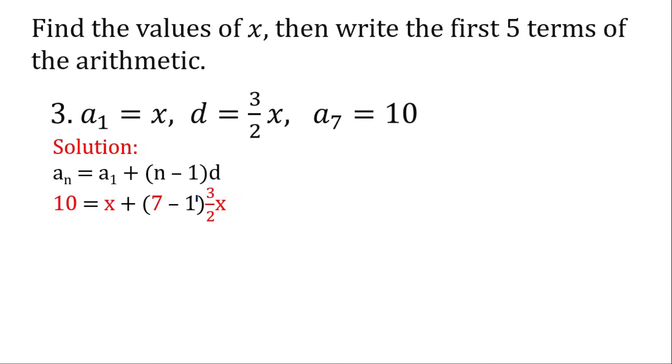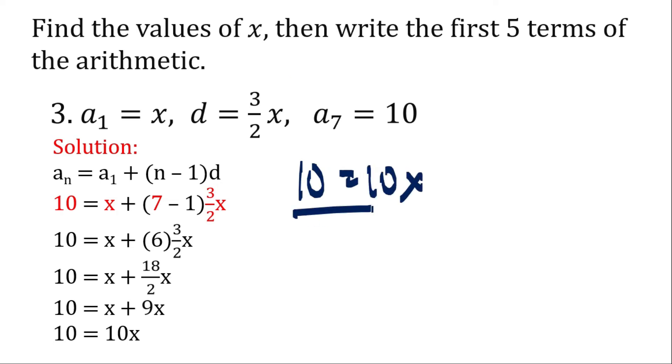Now let's subtract 1 to 7 first because it's in the parentheses. So again we have 6. Now 6 times 3 is 18, well 18 divided by 2 is 9. So x plus 9x is equal to 10x. 10 is equal to 10x, divided both sides by 10. So we have 1, so x is equal to 1.